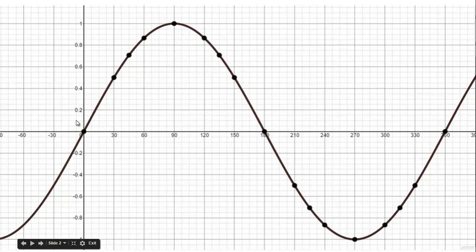When we actually graph these transformations, we're going to look at the key points: (0,0), (90,1), (180,0), (270,-1), and (360,0).